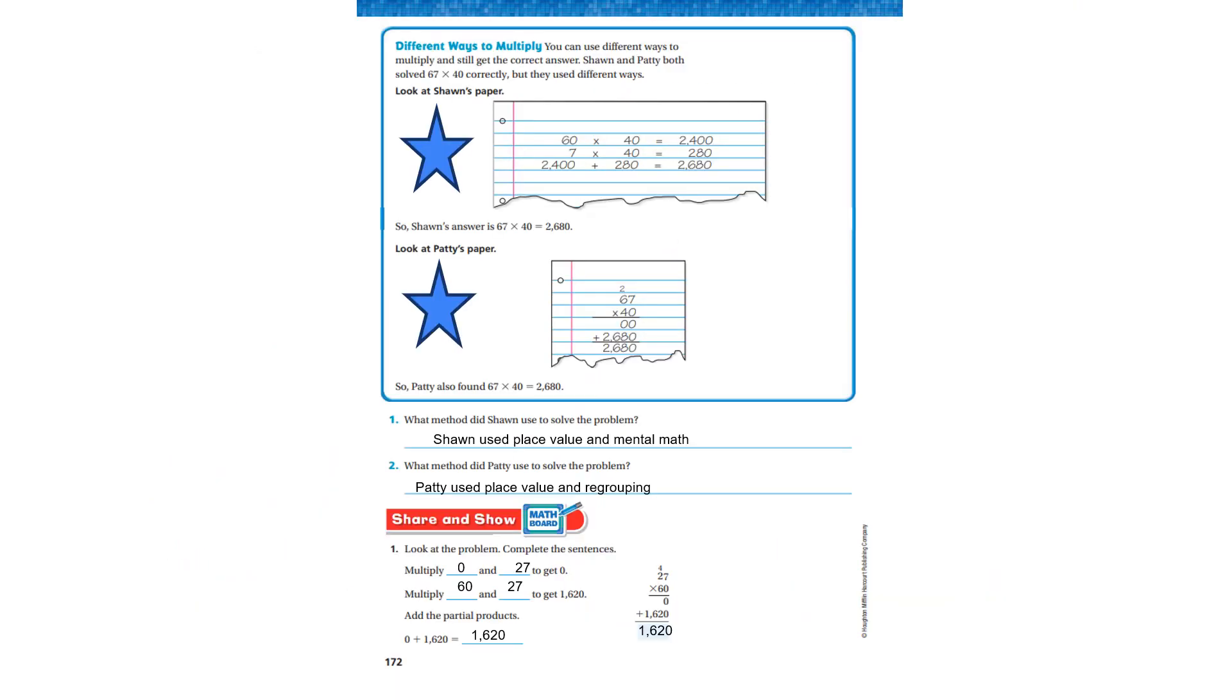Different ways to multiply. You can use different ways to multiply and still get the correct answer. Sean and Patty both solved 67 times 40 correctly, but they used different ways. Look at Sean's paper. He went, it's 67 times 40. He went 60 times 40 equals 2,400. 7 times 40 equals 280. 2,400 plus 280 equals 2,680.